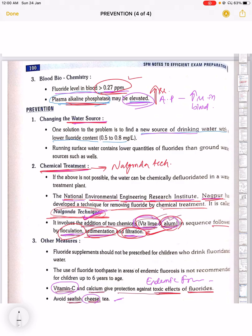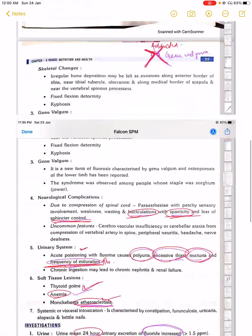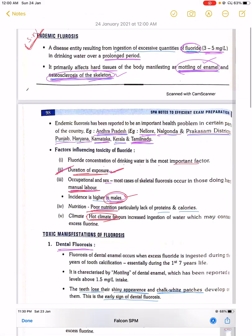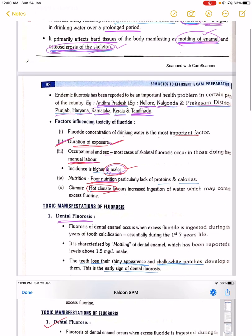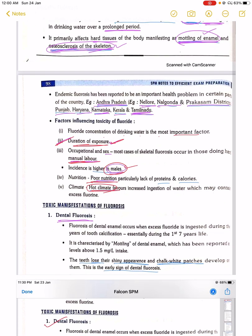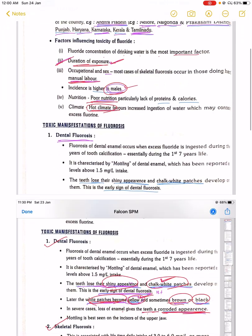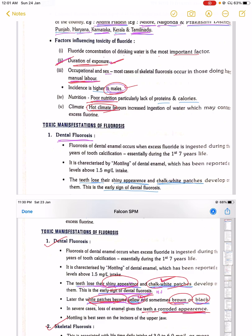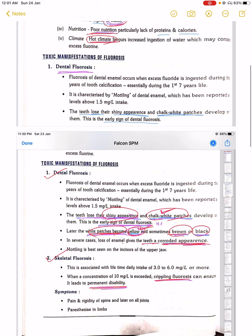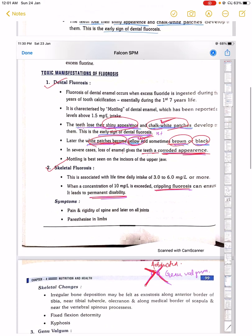This is all about endemic fluorosis. Again, you should know the definition - how much fluoride level exists before we call it endemic fluorosis. You should know the factors affecting toxicity of fluoride.